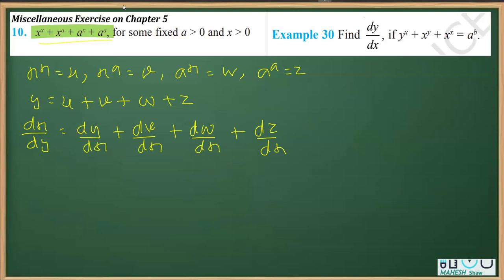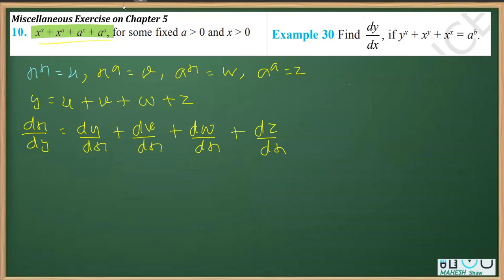Taking one at a time — starting with u, where u = x raised to the power x. In order to solve this part, I will be applying log to both sides. So applying log both sides: log u = x log x.